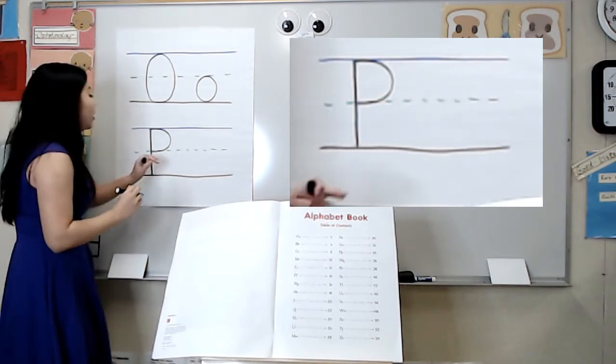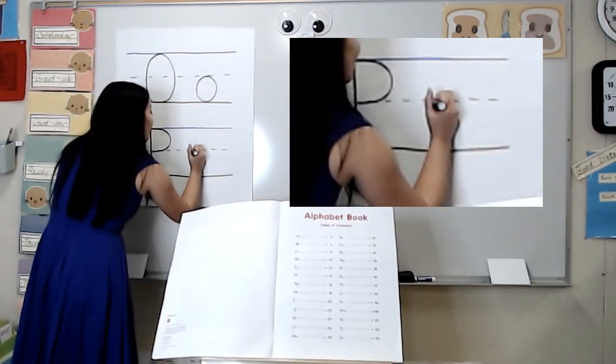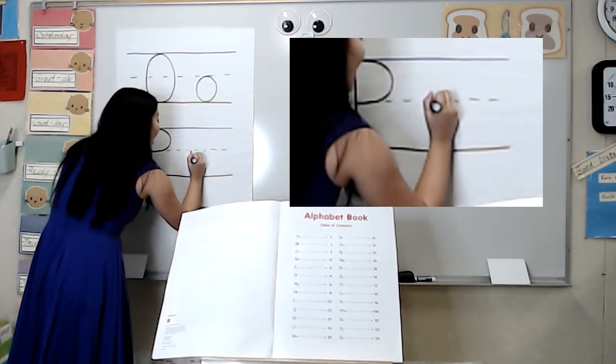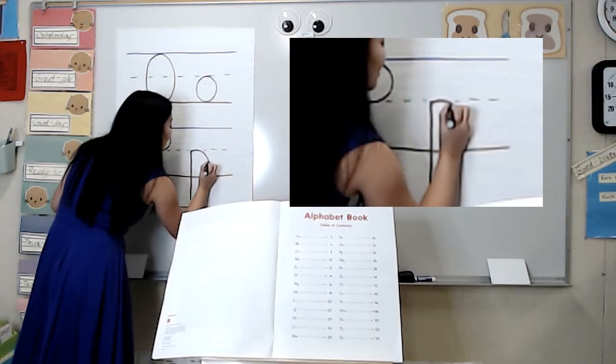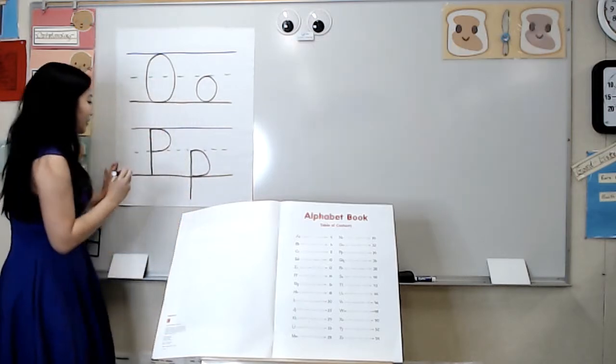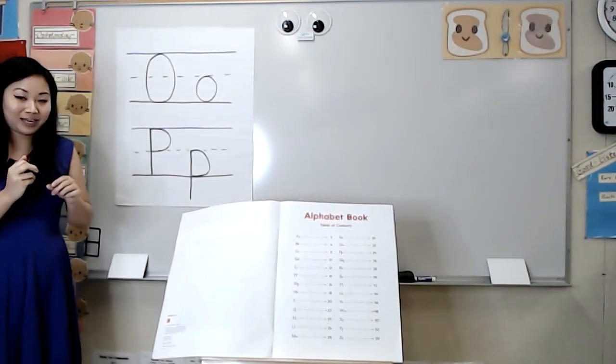For lowercase P, you start in the grass, slide underground, back to the grass, and curve around. That is a lowercase P.